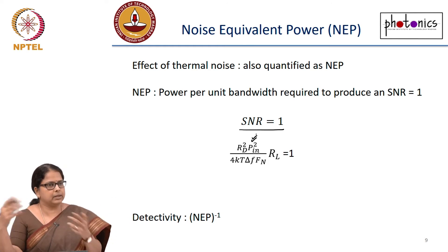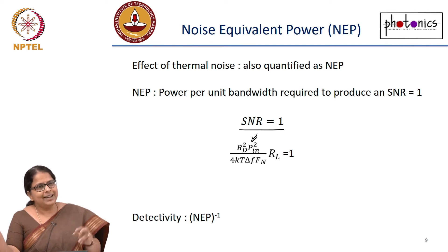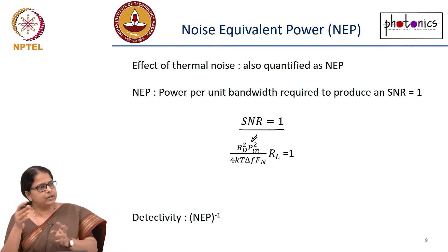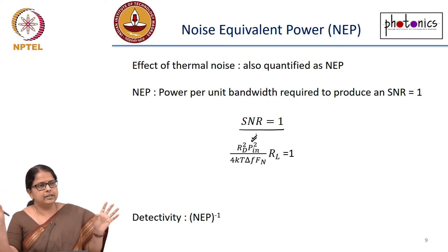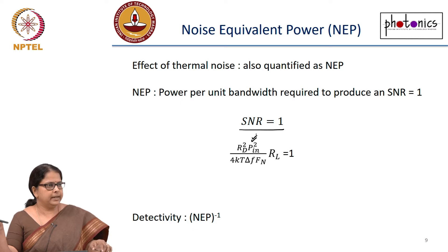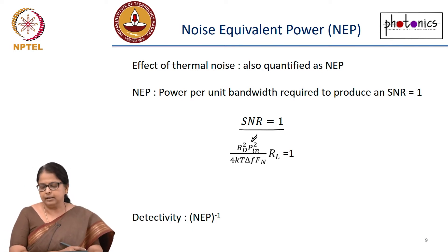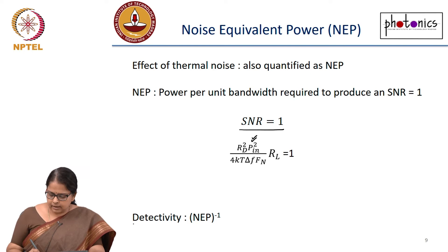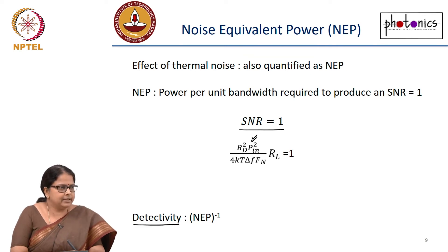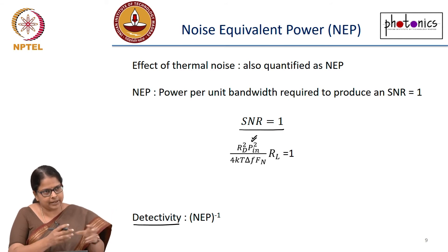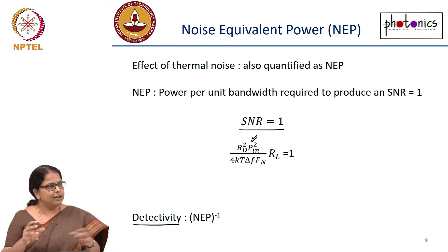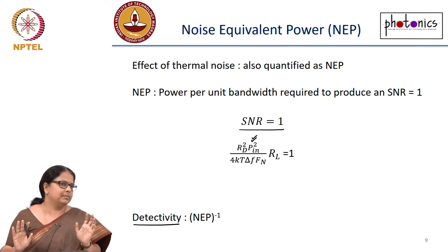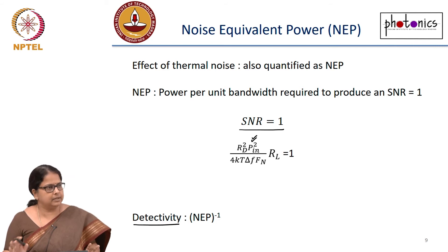Some data sheets give noise equivalent power rather than specifying load resistance, temperature, and other parameters. They generally state NEP at room temperature. Remember, this is for thermal-noise-limited systems, not shot-noise-limited systems. Some receivers also define detectivity, which is the inverse of NEP. These are different data sheet numbers you may encounter when selecting a detector for your system.